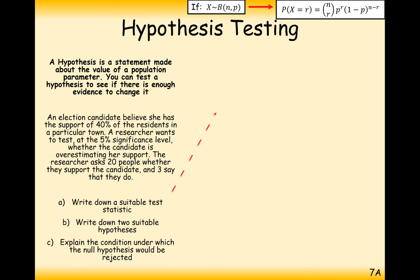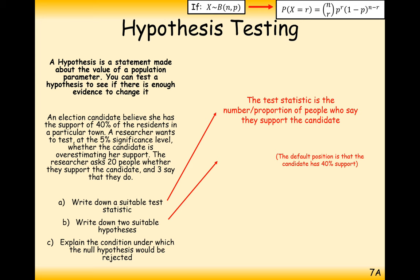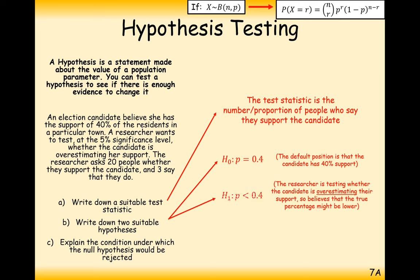Write down a suitable test statistic. Well, this is the observed amount of people who support the candidate. Two suitable hypotheses - the null hypothesis is the default state of 40% of people supporting her. And the alternative hypothesis, given that she's overestimating, the probability might be less than 0.4, so that's what our alternative hypothesis is.